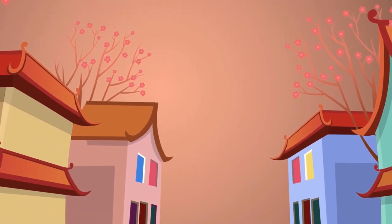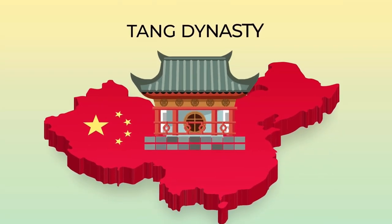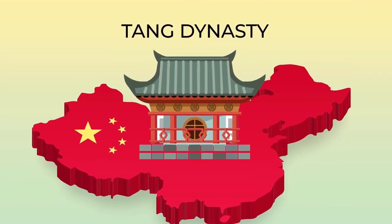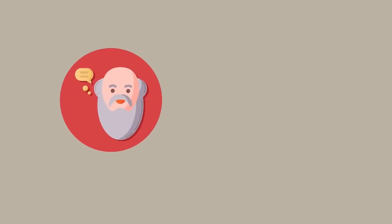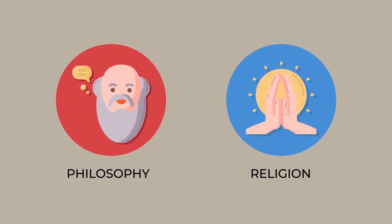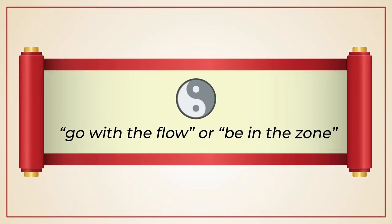At some point, it was the official religion of the country when it was under the Tang Dynasty. So in a way, we can say that Taoism is both a philosophy and a religion at the same time. The primary emphasis of the teachings of the Tao is to do things that are natural and to go with the flow, or as athletes would say, be in the zone.